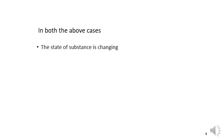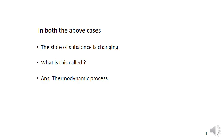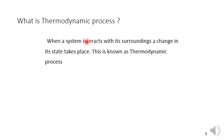In both above cases, the state of the substance is changing — it is changing from one state to another state. This is called a thermodynamic process. A thermodynamic process is a change in the state of a system during its interaction with the surroundings. When a system interacts with its surroundings and a change in its state takes place, this is known as a thermodynamic process.